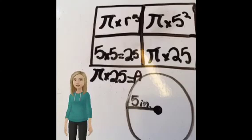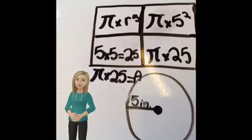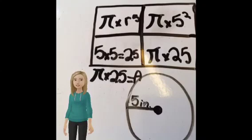If we know the radius is 5 inches, and 5 inches squared is 25, then to find the area of this circle all you have to do is pi times 25.